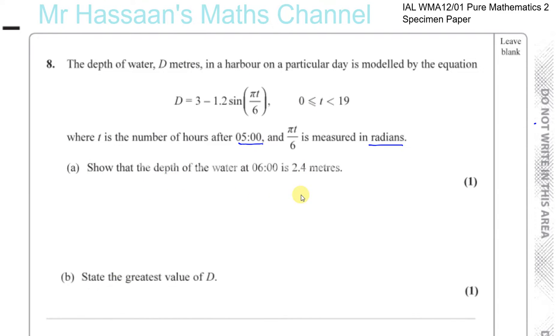Part (a): Show that the depth of the water at 06:00 is 2.4 meters. At 0600 hours in the morning, t equals 1. T is the number of hours after 5, so this is 1 hour after 5. So the depth of water in the harbor will be given by substituting t equals 1. So you have 3 minus 1.2 times the sine of pi over 6.